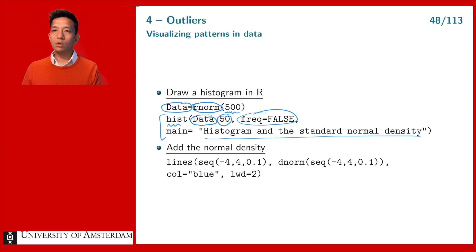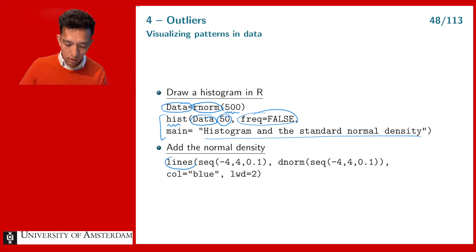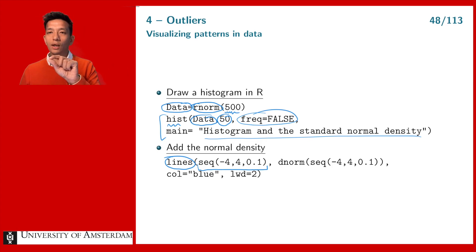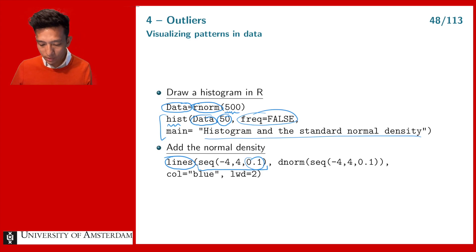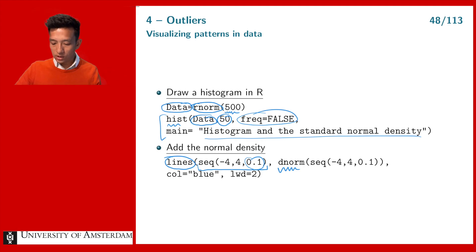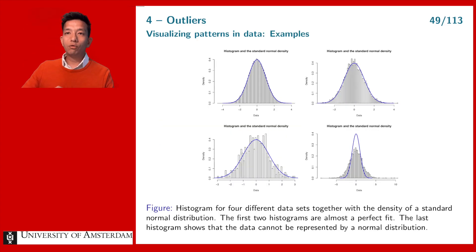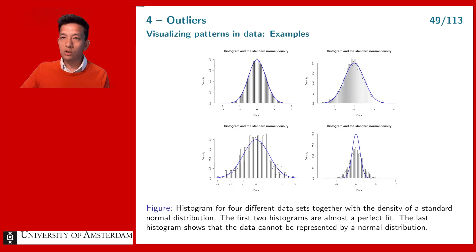A standard normal distribution has mean zero and standard deviation one. I'm going to add a line to the histogram. With the sequence function I make the x values, going from minus 4 to 4 with a step size of 0.1. The function dnorm gives me the density of a normal distribution, which I calculate at those x-axis values. If you run the code from the previous slide, you get a plot that looks like one of these four plots.